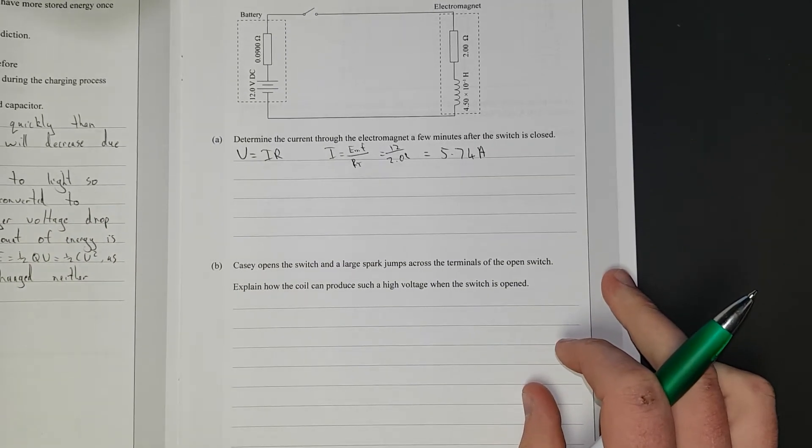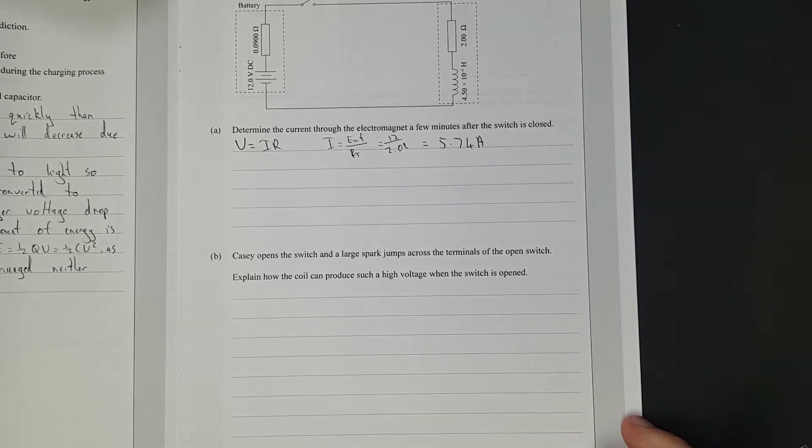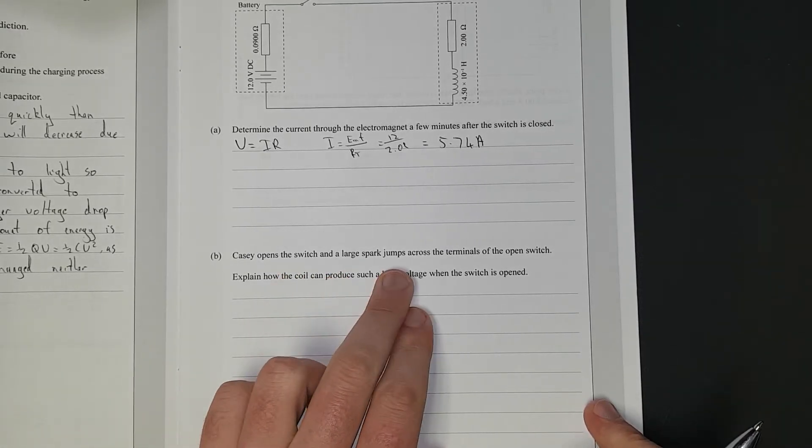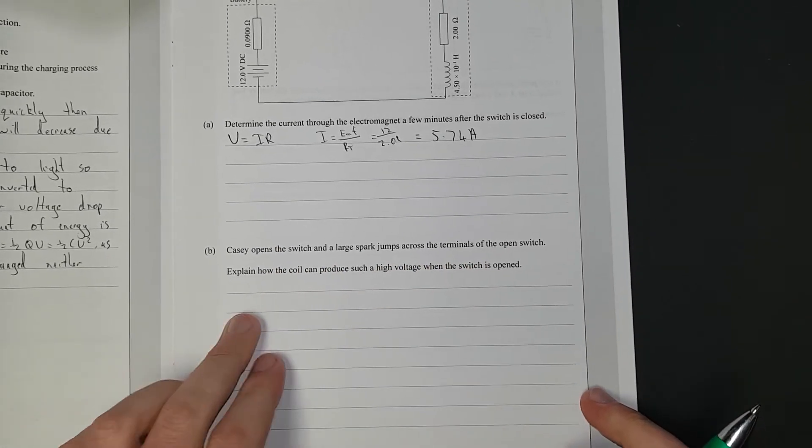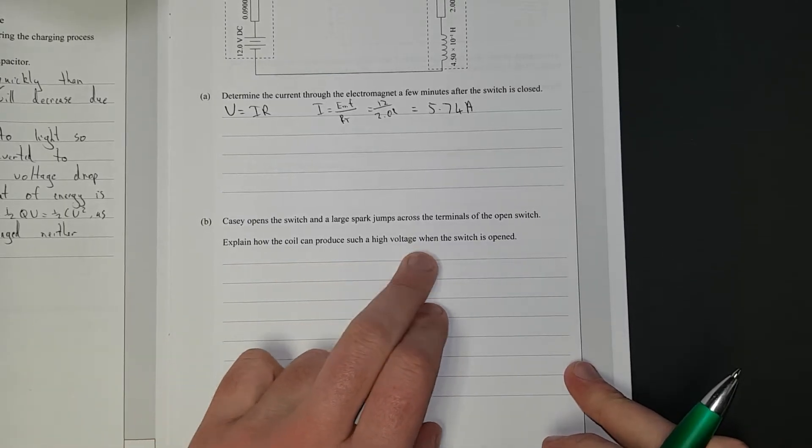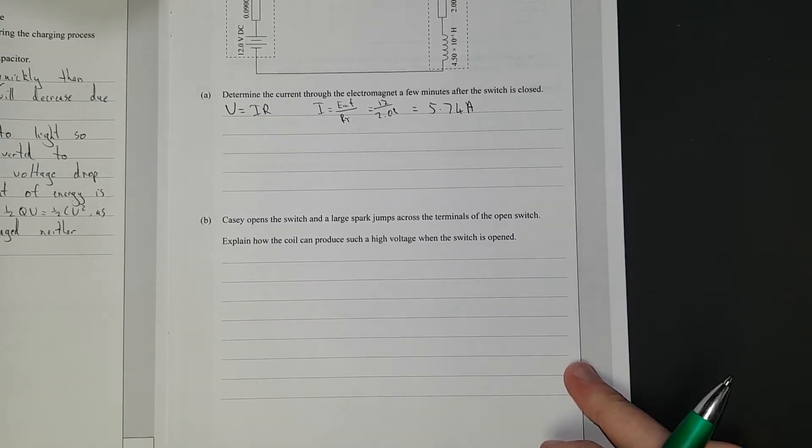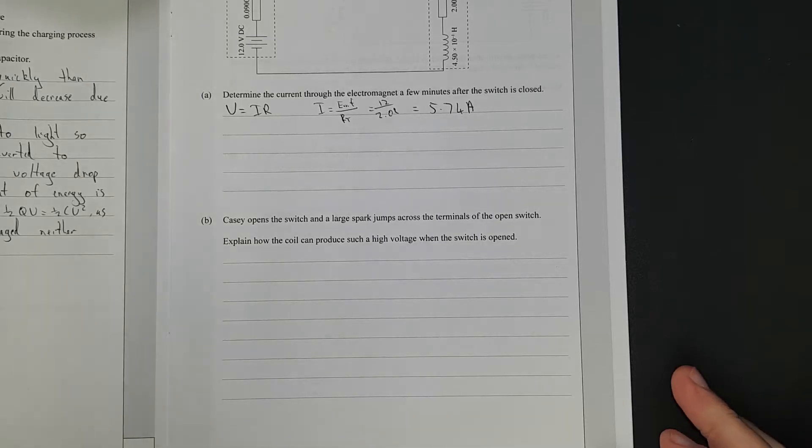I think if you just find it by hook or crook you get there. Right. What do we got? Casey now opens the switch and a large spark jumps across the terminals of the switch. Explain how the coil can produce such high voltage when the switch is opened. So I'll just pause this, write the answer, and then discuss.